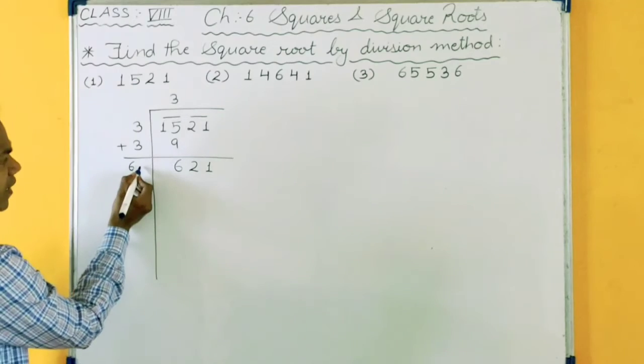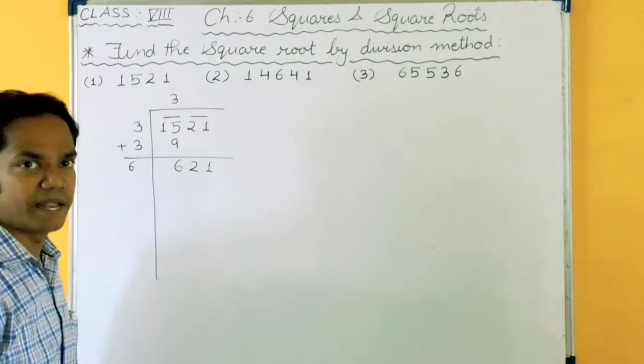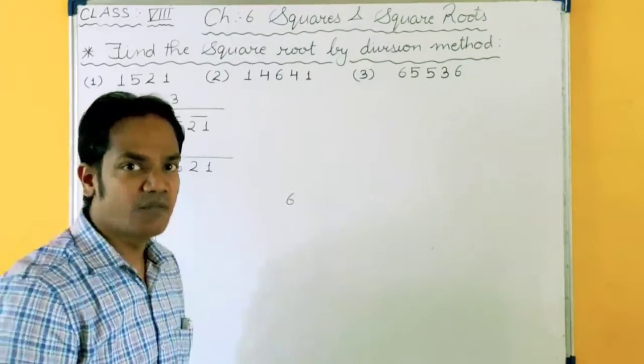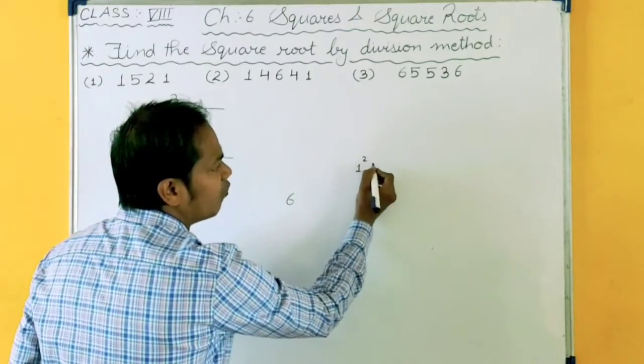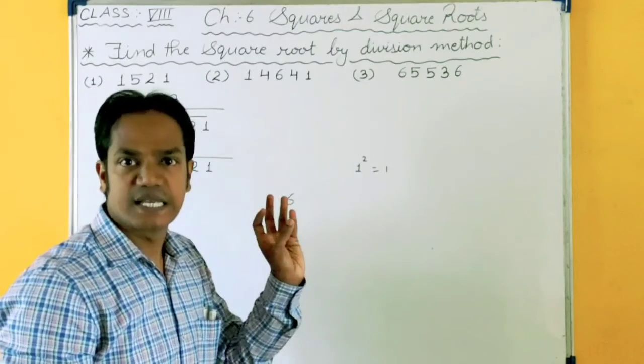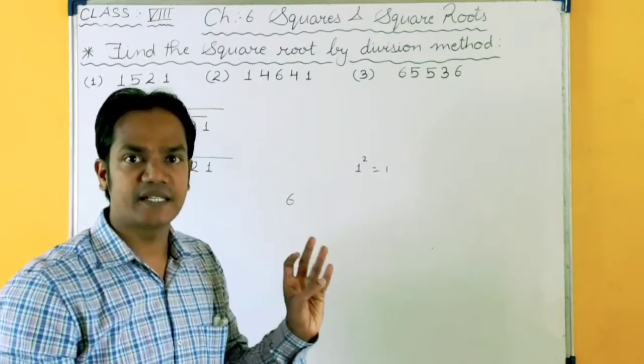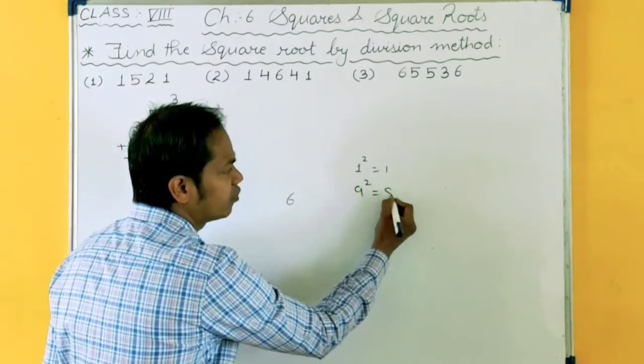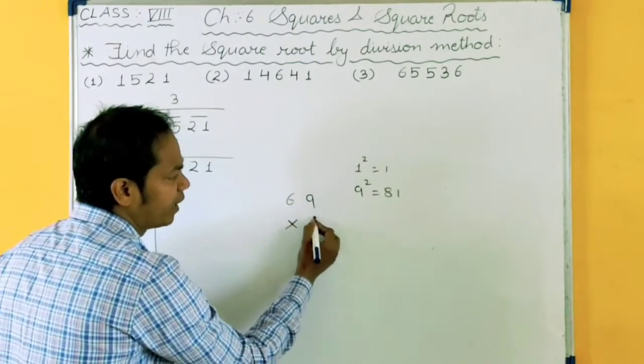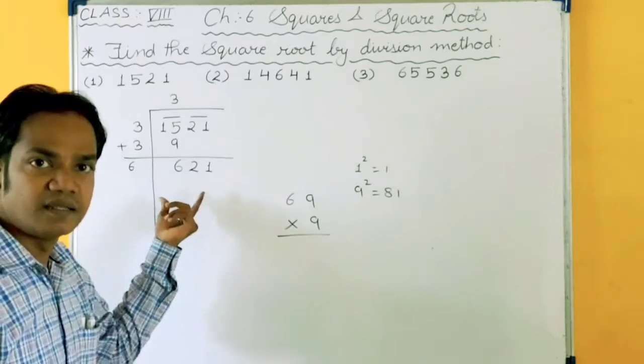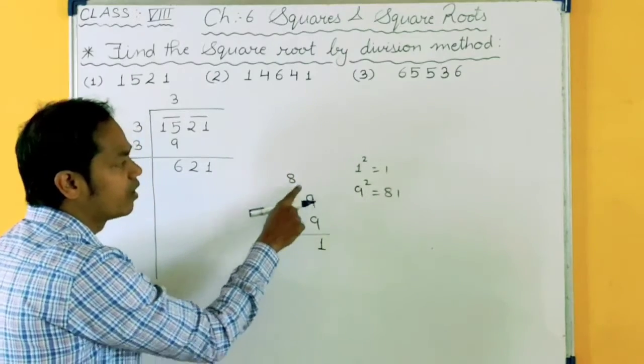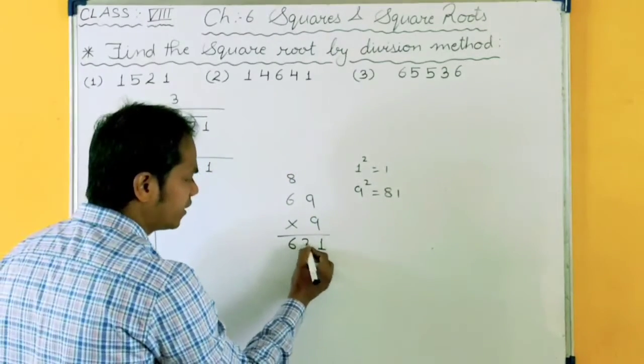Now you have to take one number here and with the same number you will multiply. See you want 621. In which table 1 is coming? Let me check with 9. I will multiply it by 9. 9 times 9 is 81, carry 8. 9 times 6 is 54, 54 plus 8, 62. Yes we are getting it.